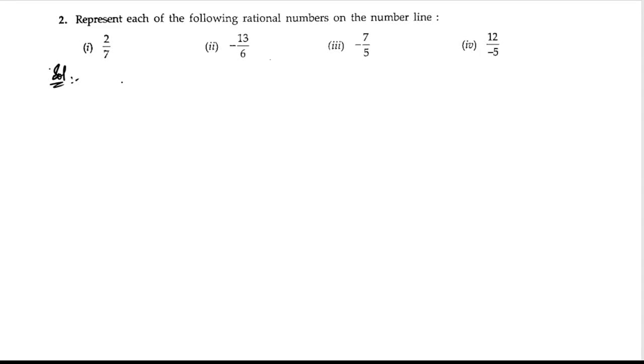Second problem: represent each of the following rational numbers on the number line. We have to represent each of these numbers on the number line. Let us start. Let us take the first bit, 2 by 7.